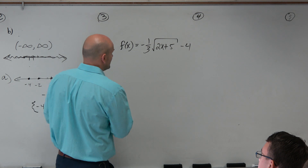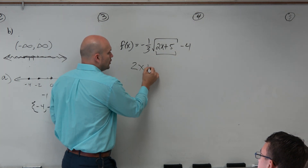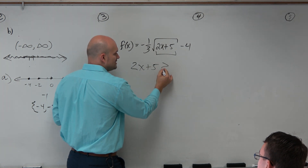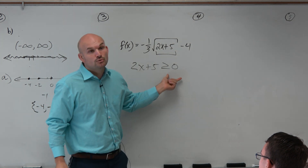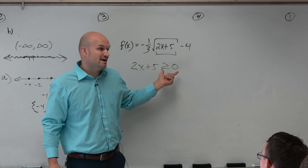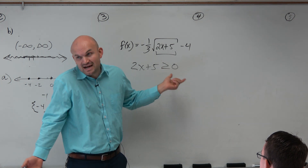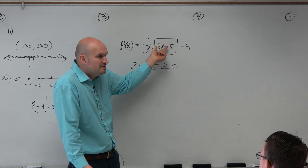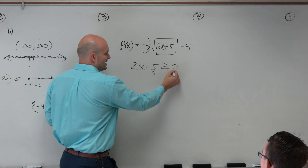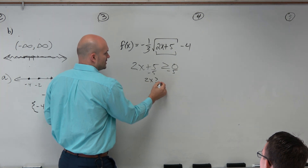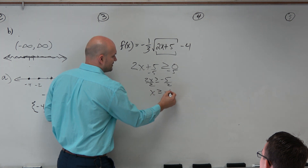So all we need to do is just extract our radicand — the expression under the radical — and determine which values are going to be greater than or equal to zero. Greater than or equal to zero just means something has to be positive. So now we just have an inequality we can solve. We subtract the 5: 2x is greater than or equal to negative 5, then divide by 2. So x is greater than or equal to negative 5 halves.